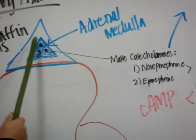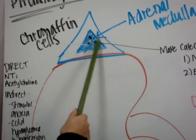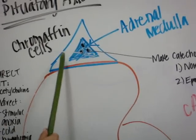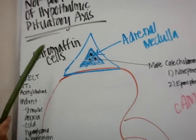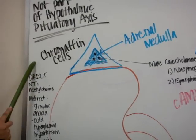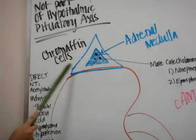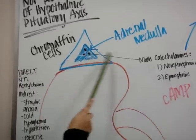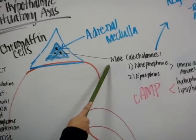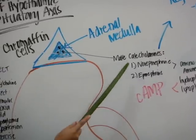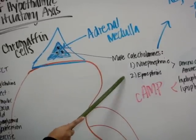The adrenal medulla is the innermost part of the adrenal gland. We're going to be talking about chromaffin cells, which make catecholamines — specifically norepinephrine and epinephrine.